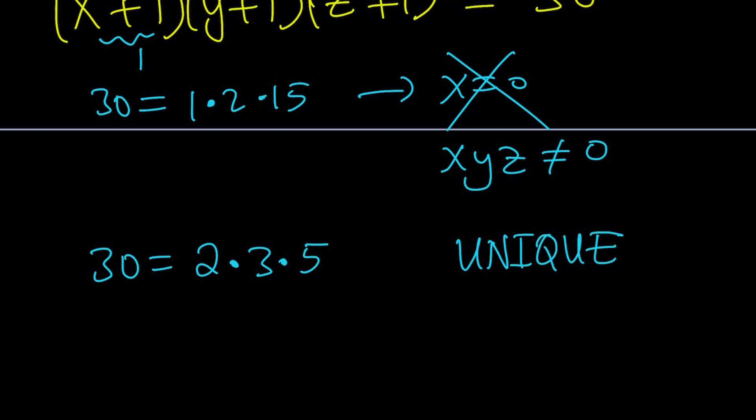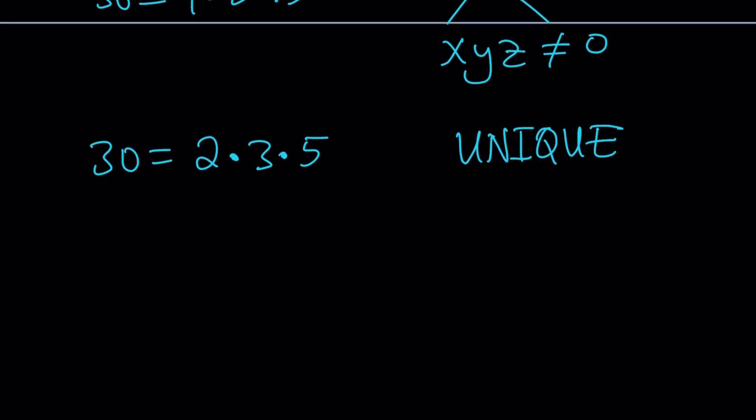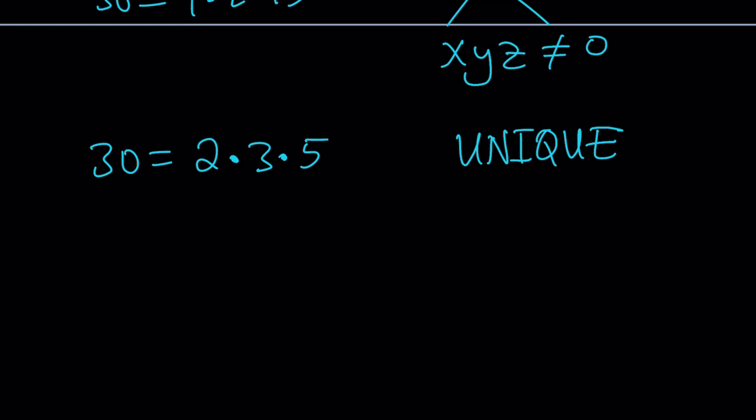And it is unique. Prime factorization of an integer is unique. And the proof for uniqueness is very interesting. You can look it up. But there's only one way to break it down into primes. And this is 2 × 3 × 5.